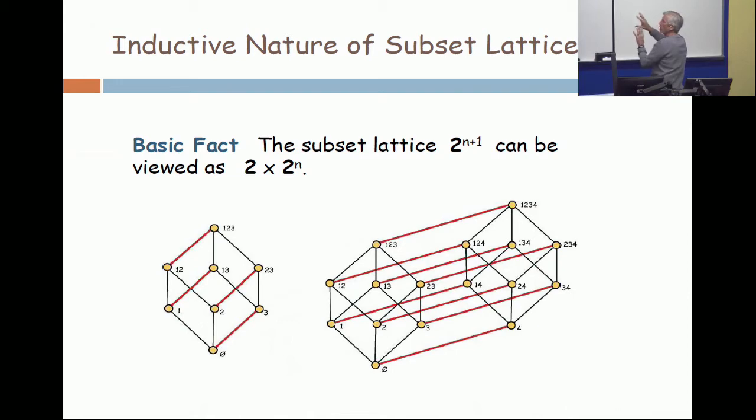Those two are copies of each other, and they're linked by the red edges that form a matching. So at one end of the red, you see the same set as the other end, but with a three added.